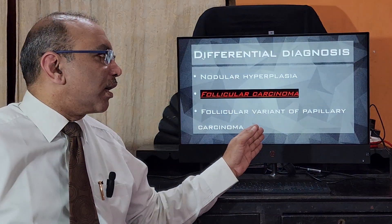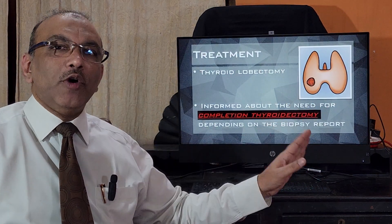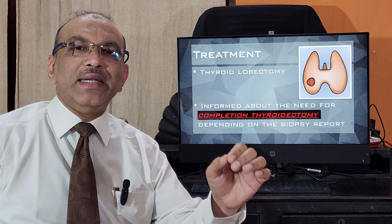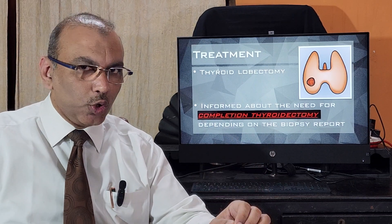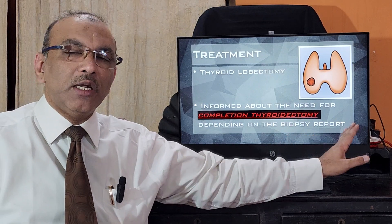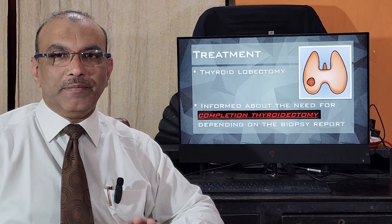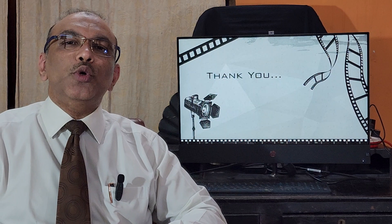As far as the treatment for follicular adenoma is concerned, that particular part of the thyroid will be removed — that is partial thyroidectomy. But before doing that, we will tell the patient that if it turns out to be follicular carcinoma, we have to remove the other part of the thyroid gland also, meaning a completion thyroidectomy needs to be done. After partial thyroidectomy, if the report turns out to be follicular adenoma, then there is no further treatment.